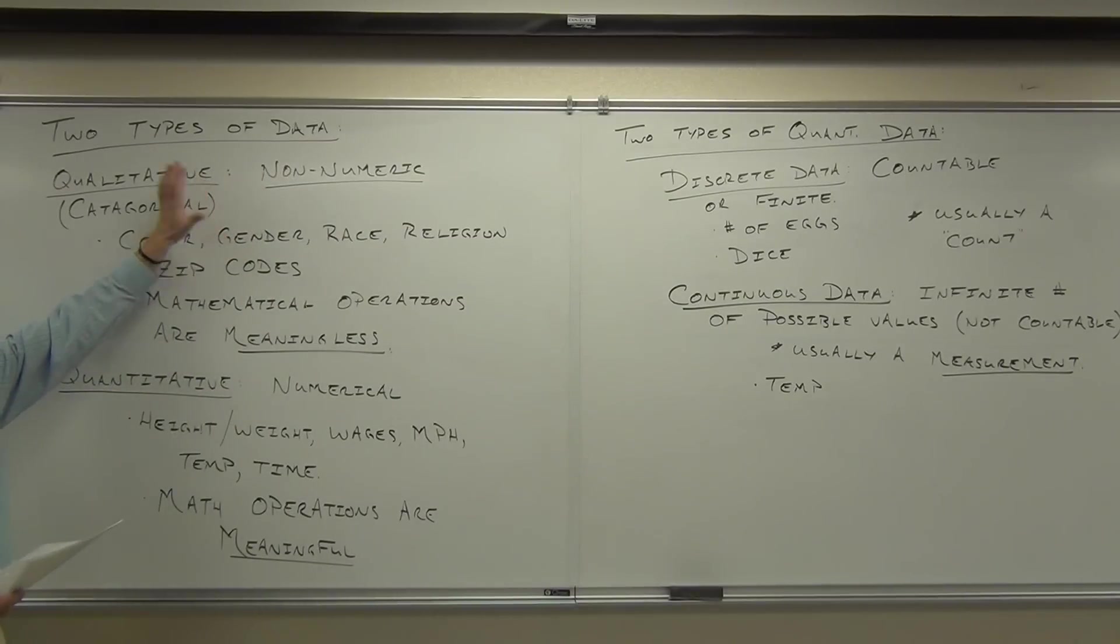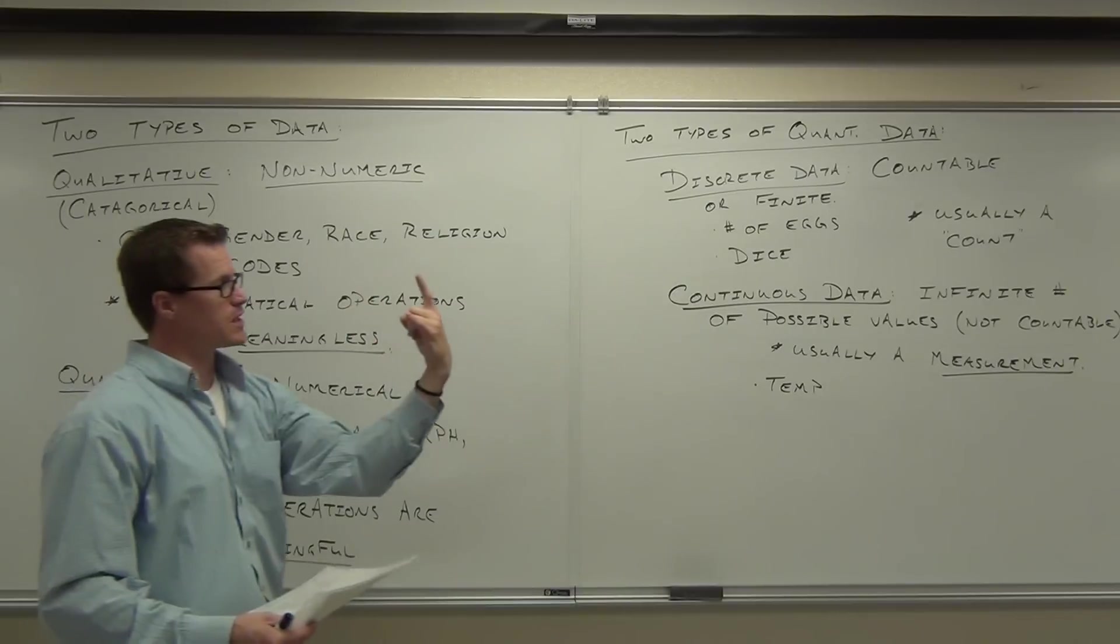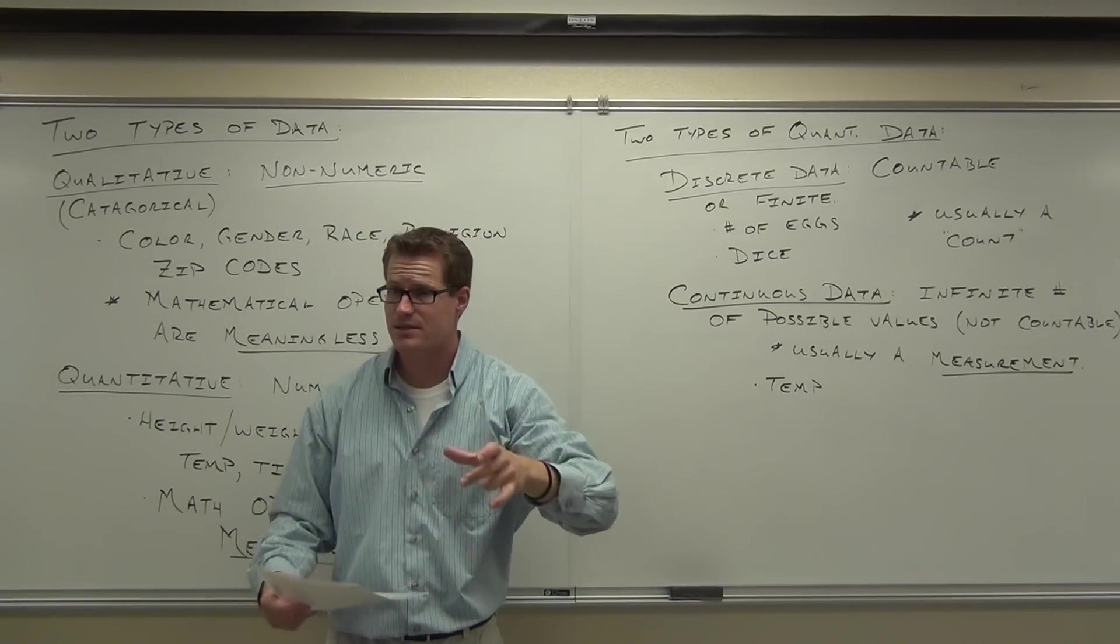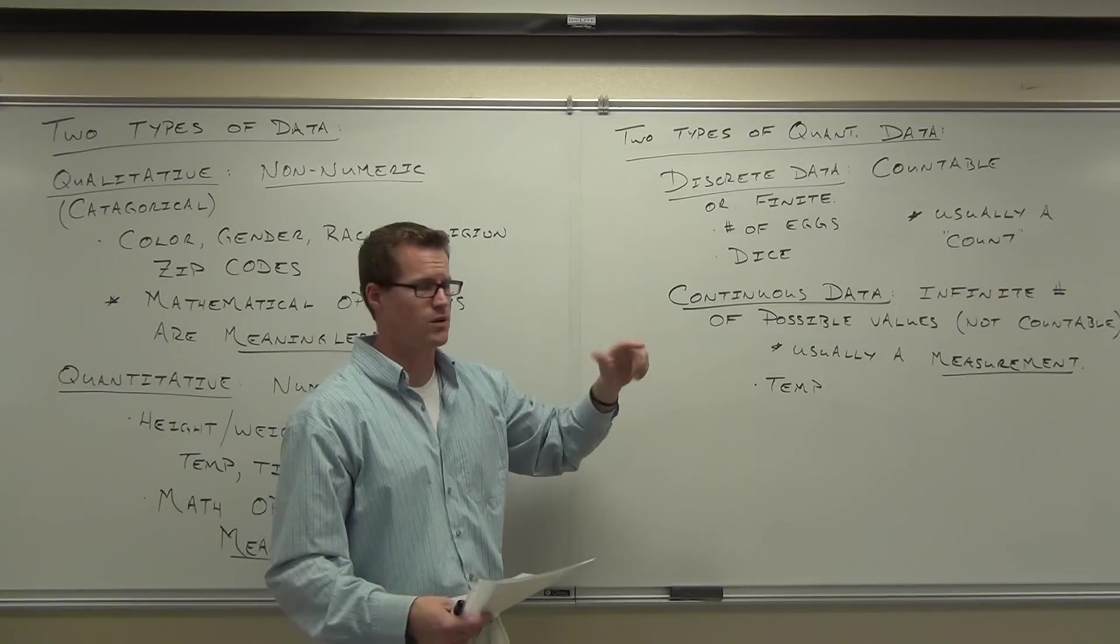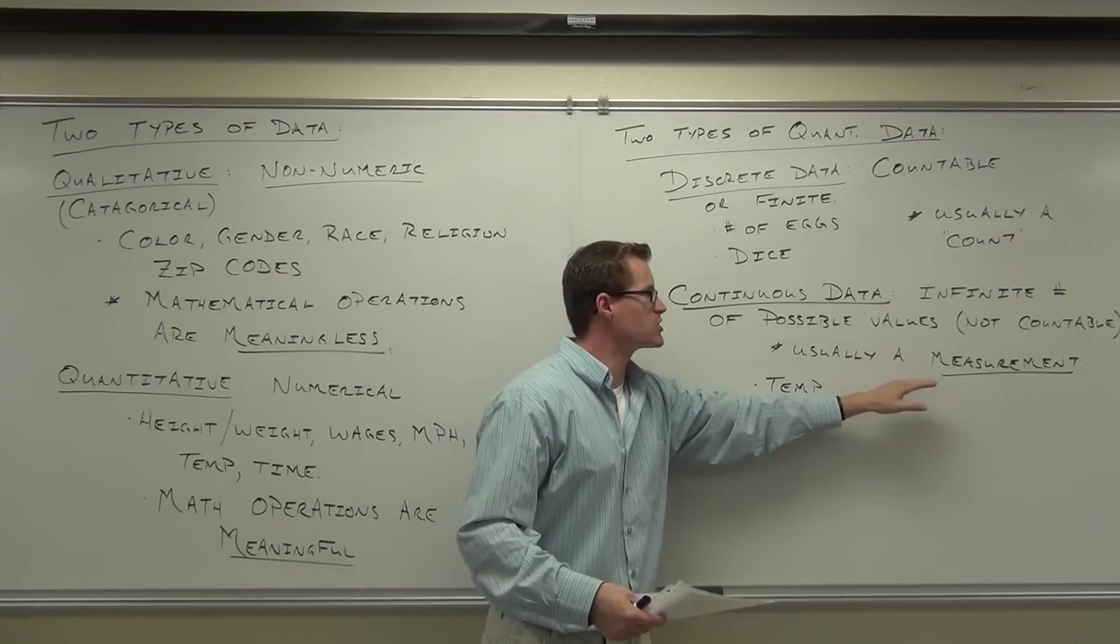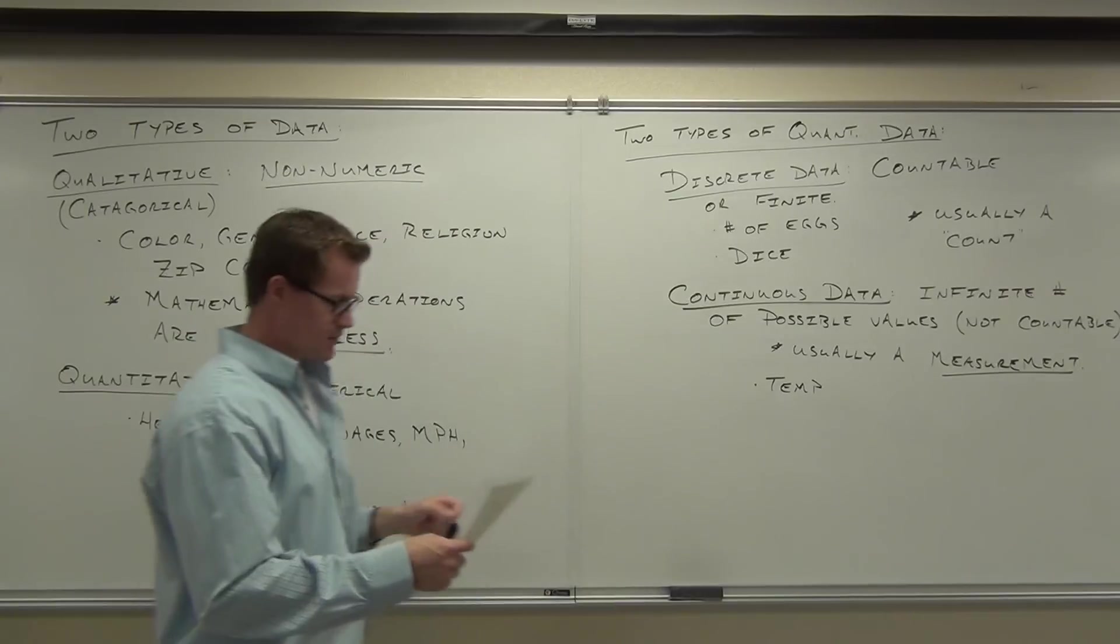Within this one, that's all there is. Qualitative is just qualitative. Within quantitative, we've got two different scenarios. You could be discrete, just count it up, or there's a finite number like the dice. You know, there's only six sides of the dice. That's all you could be. Or continuous, infinite number of possible values. These are usually measurements. This is usually counting. Typically, that's what that is.